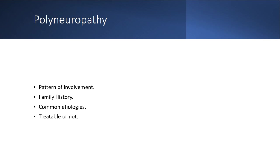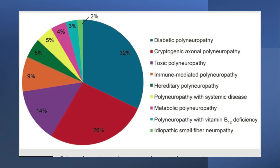If you know the etiology, you can treat it. A good number of patients have diabetic neuropathy, so please think carefully before considering something else, especially if it fits the pattern. Do the oral glucose tolerance test. Even if nothing else is found, it could still be diabetes — it can even present in a demyelinating pattern. Cryptogenic axonal polyneuropathy most of the time falls into diabetic neuropathy.